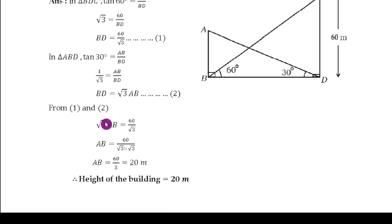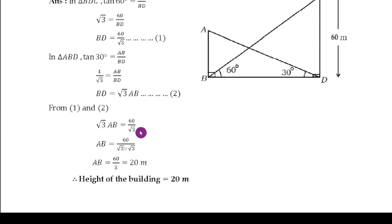From equations 1 and 2, since both equal BD: √3·AB = 60/√3. Therefore AB = 60/(√3 × √3) = 60/3 = 20. So the height of the building is 20 metres.